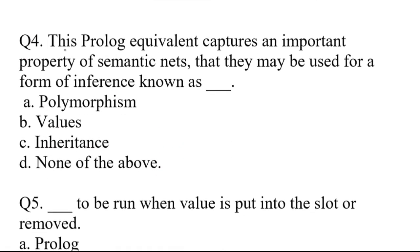Question number four. This Prolog equivalent captures an important property of semantic nets that may be used for a form of inference knowledge as dash. A. Polymorphism, B. Values, C. Inheritance, D. None of the above. Right answer is option C. Inheritance.